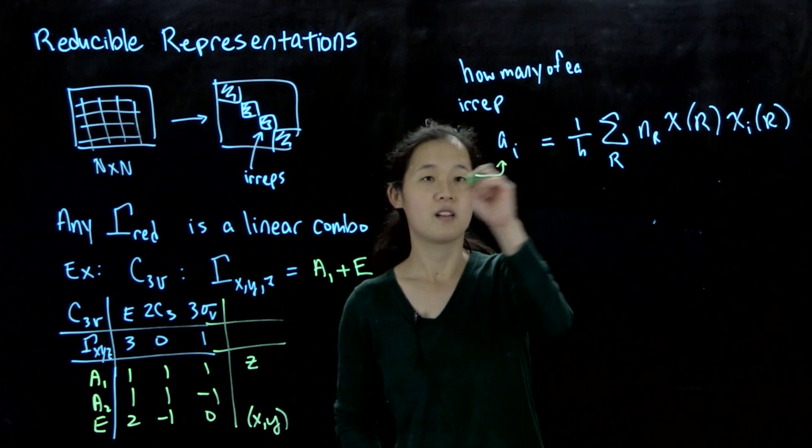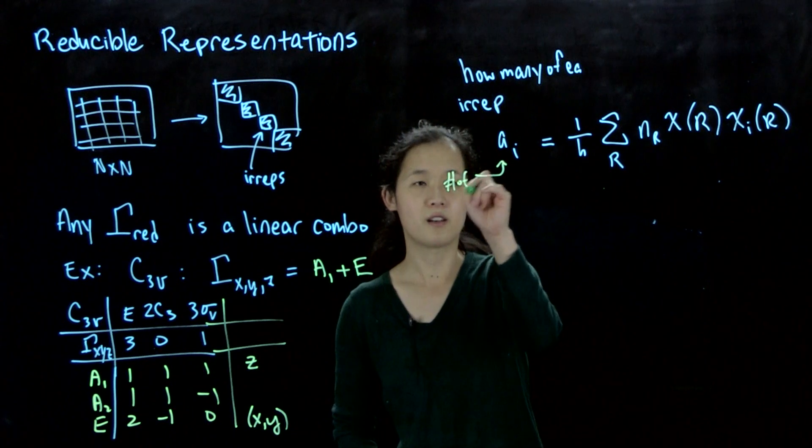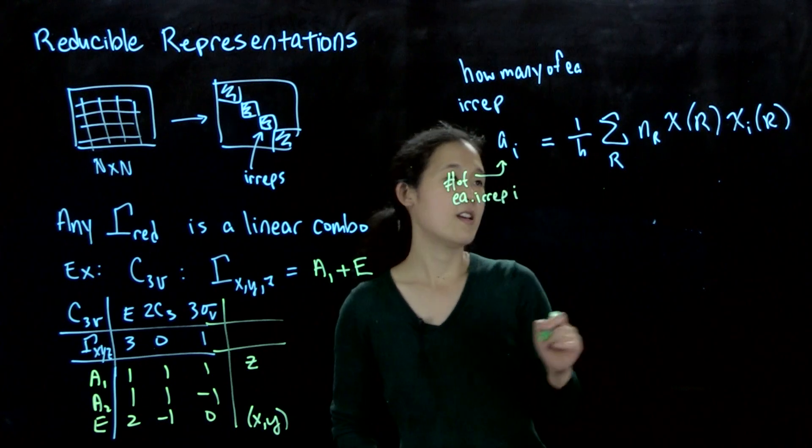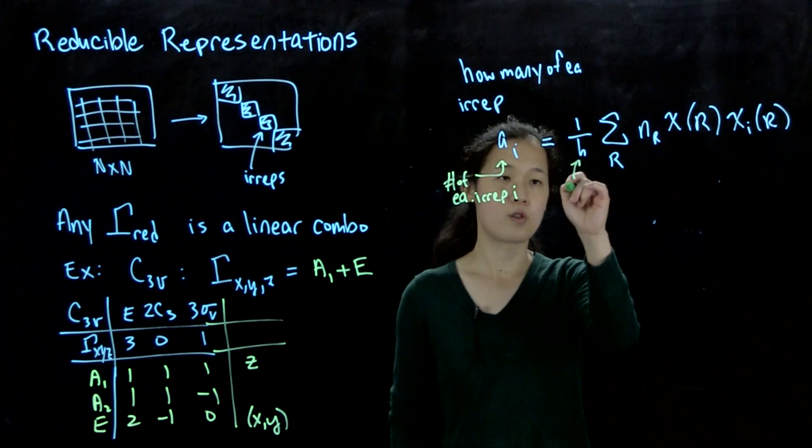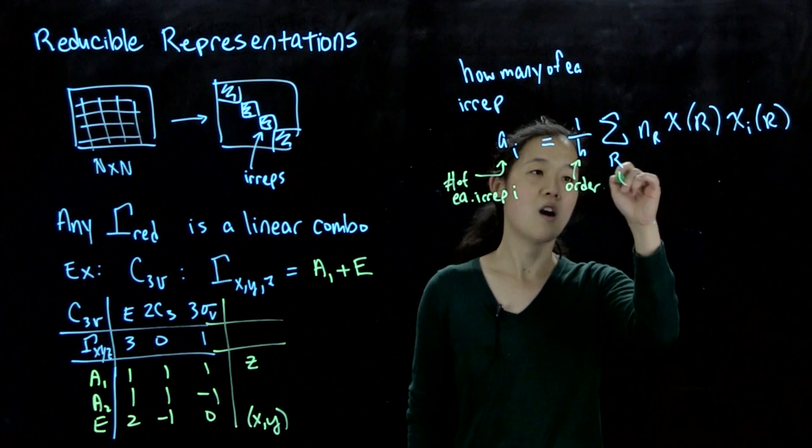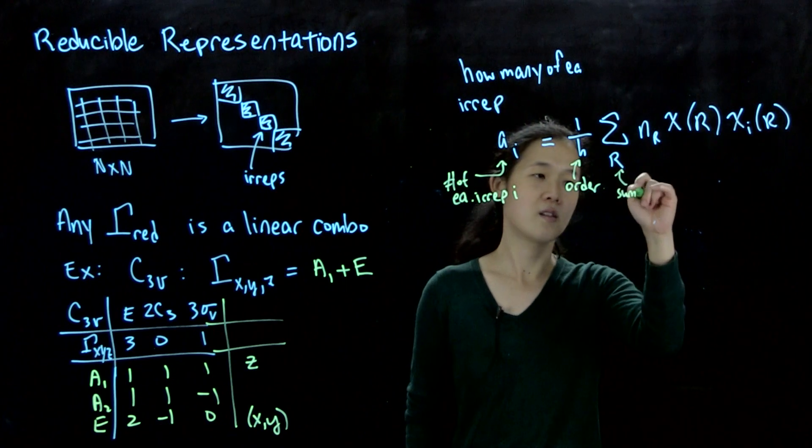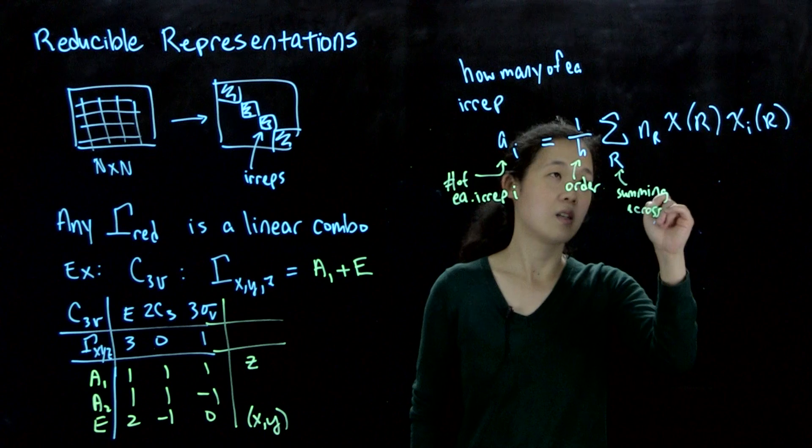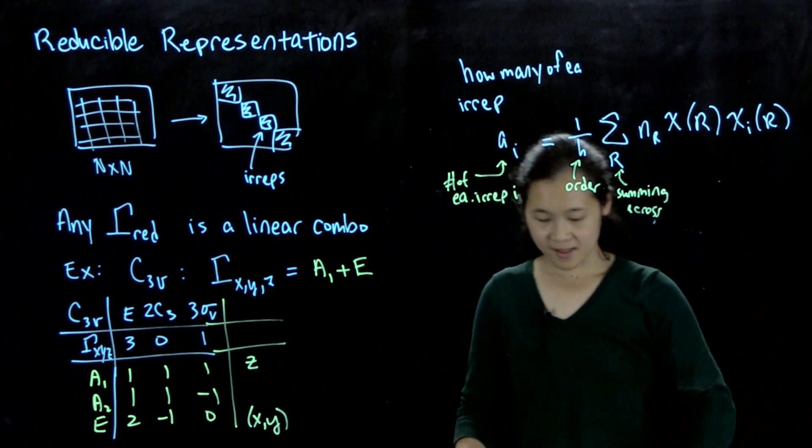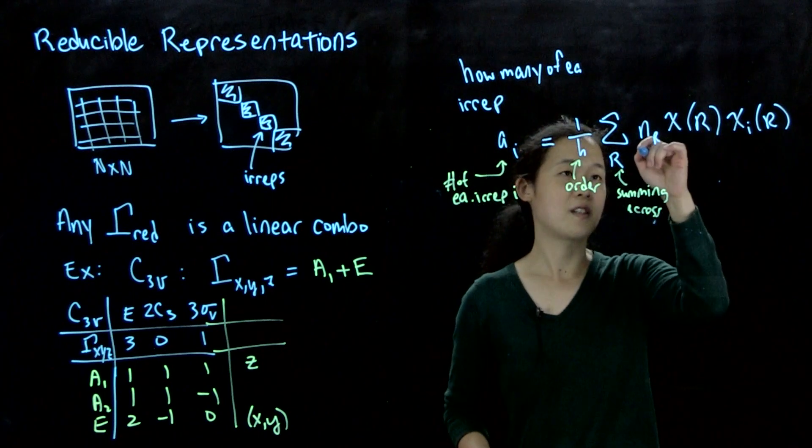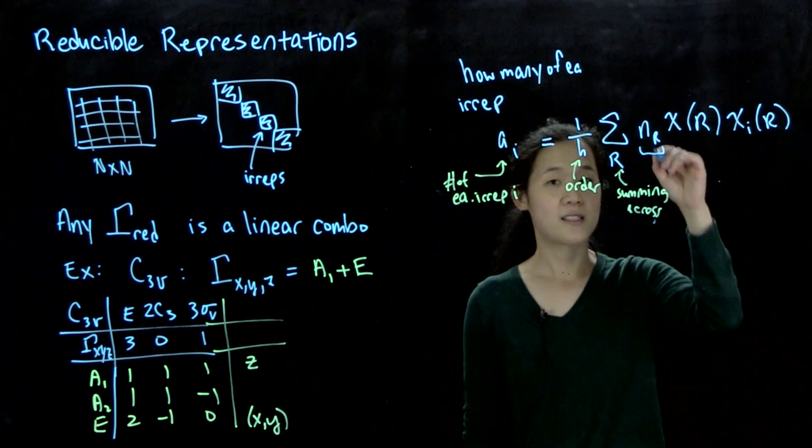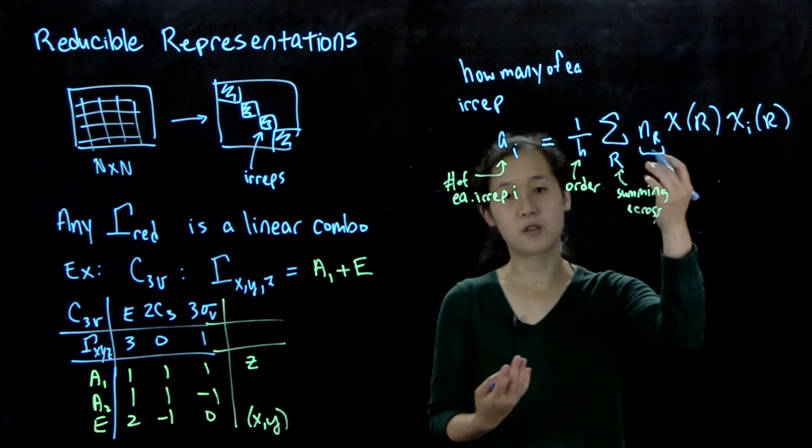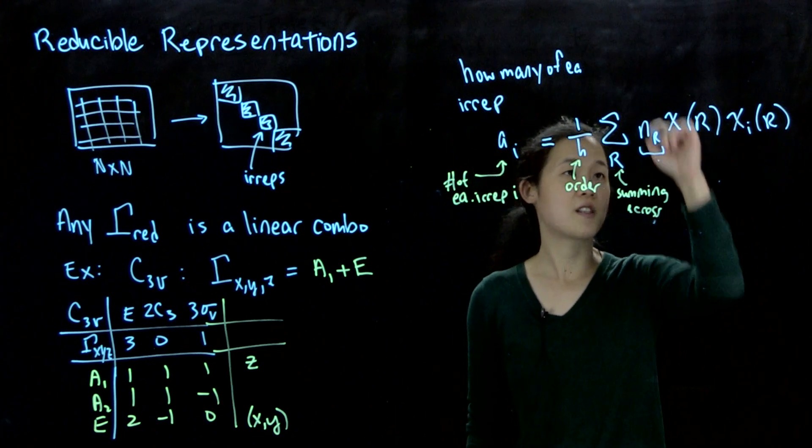What we're saying is the number of each irrep i. Here, h is the order of the point group, r is summing across all operations. I added this n, which is the coefficient for the number of operations in each class. We didn't use it last time because we actually considered each element within each class. You could also do it this way, same thing. So this is the coefficient of the class.